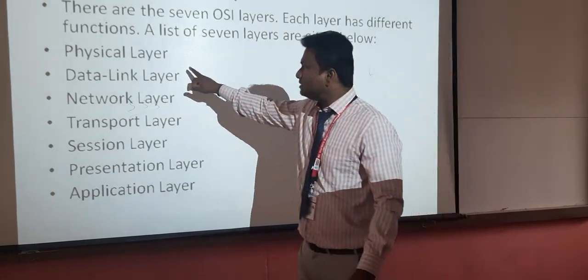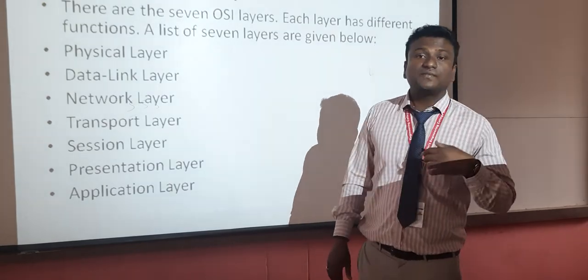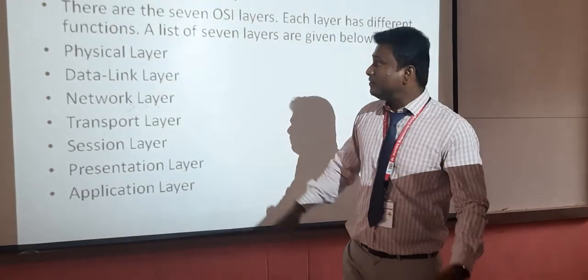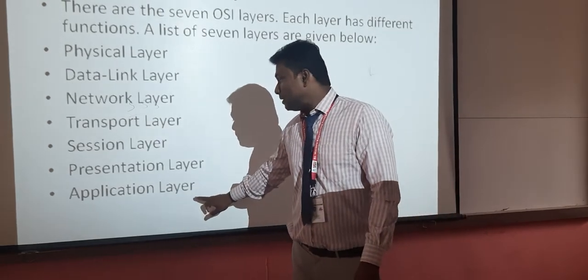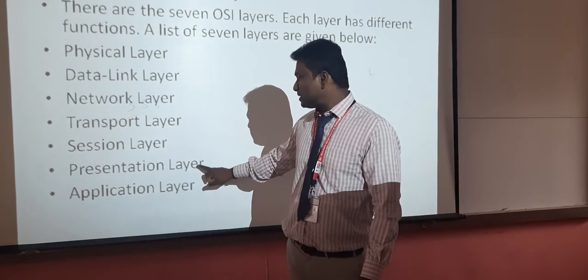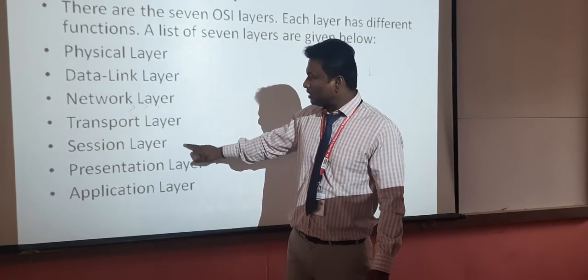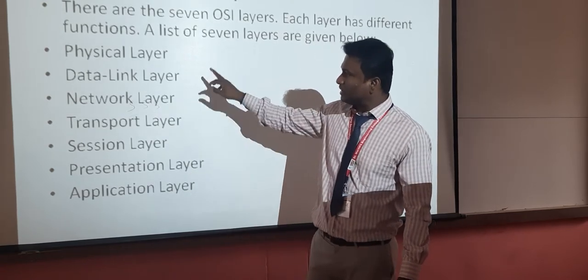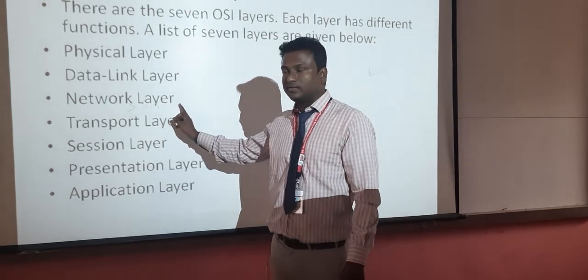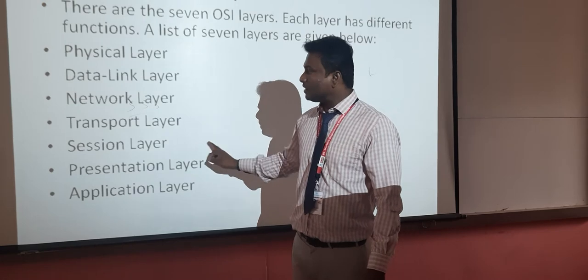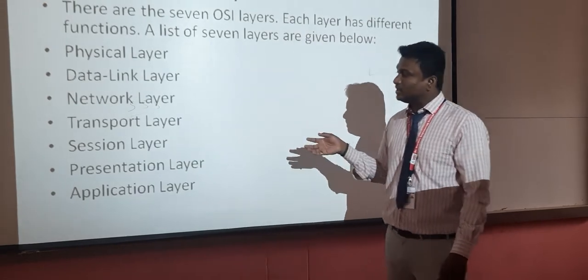Students need to remember the layer numbers. Layer one is the physical layer, and layer seven is the application layer. Layer three is the network layer, and layer five is the session layer. In this way we represent the layers — layers seven, six, and five are the top layers.